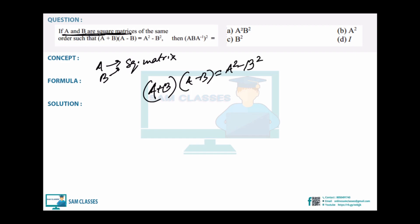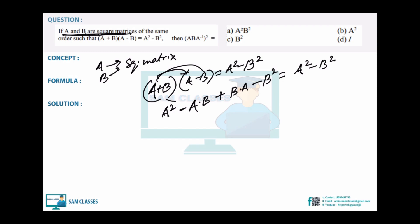(A+B)(A-B) = A² - AB + BA - B² = A² - B². This means -AB + BA = 0, so AB = BA. Important: in matrices, AB ≠ BA in general — don't cancel them like scalar variables. By solving, we derived that AB = BA.